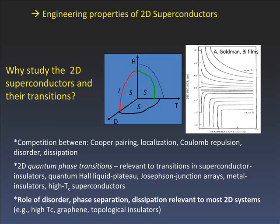These transitions also appear in things like quantum Hall systems, Josephson junction arrays, and high-Tc superconductors. The things important to these transitions in 2D superconductors — understanding the role of disorder, phase separation, and dissipation — are also common to almost all 2D systems, from high-Tc to graphene to topological insulators.